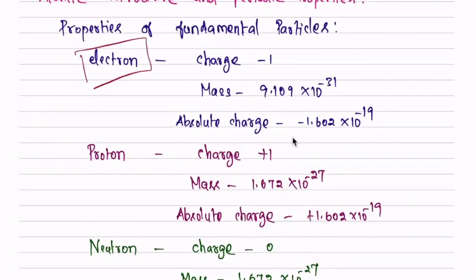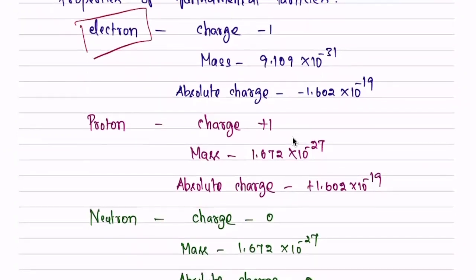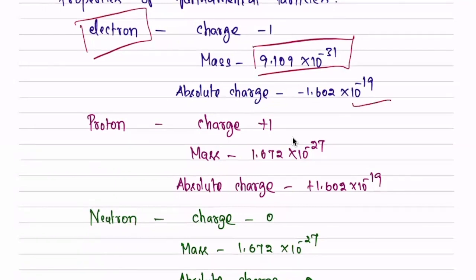Now we need to know the mass of the electron. The absolute charge of the electron is 1.602 times 10 to the power of minus 19. The mass is 9.1 times 10 to the power of minus 31. You need to commit these to memory.